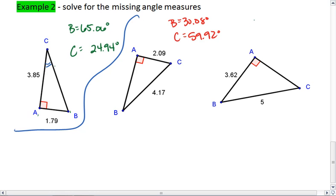Alright, for our third and final example, we're just given two sides. Let's go ahead and solve for angle B first.